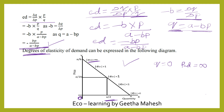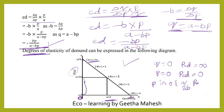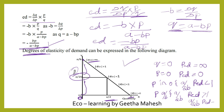Looking at the demand curve, when quantity equals zero, elasticity of demand is equal to infinity. When price is equal to zero, then elasticity of demand is equal to zero. When price lies between zero and A divided by 2B, price elasticity of demand is less than 1. When price lies between A divided by B and A divided by 2B, price elasticity of demand is greater than 1. If price is exactly A divided by 2B, price elasticity of demand is equal to 1.